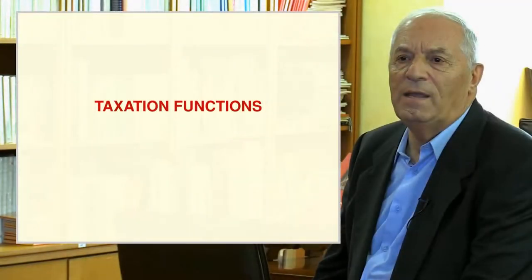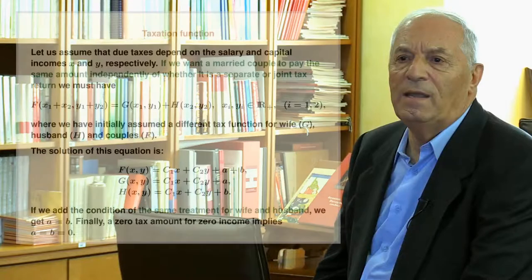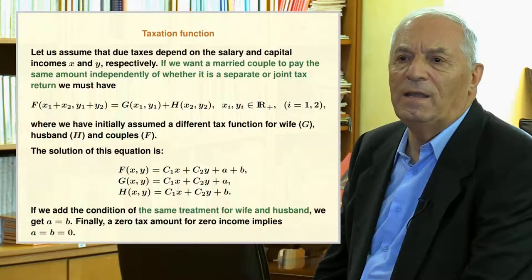Next, we build some tax action models. The first is a simple one, the second a much more complex model. Assume that dual taxes depend on the salary and capital incomes x and y respectively. If we want a married couple to pay the same amount independently of whether it is a separate or joint tax return, the indicated functional equation must hold, where we assume a different tax function for the wife g, the husband h, and the couple f. The solution is given. If we add the condition of same treatment for wife and husband, we get a equal to b. A zero tax amount for zero income implies a equal to b equal to zero.